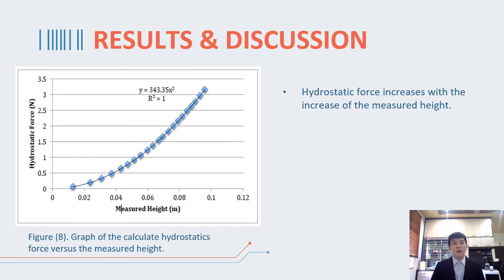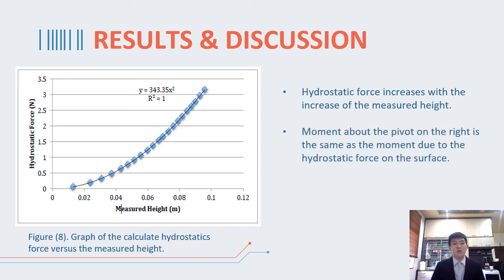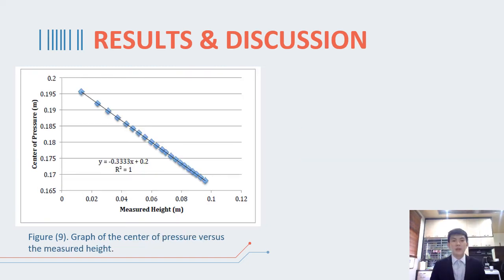This can be explained as the moment about pivot on the right end of the balance arm must be equal to zero. The moment due to the weight of the applied mass is equal to the moment due to the hydrostatic force on the surface. As height increases, hydrostatic force increases, thus weight also increases.